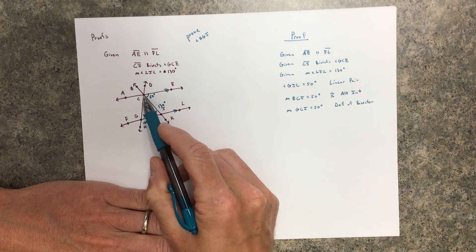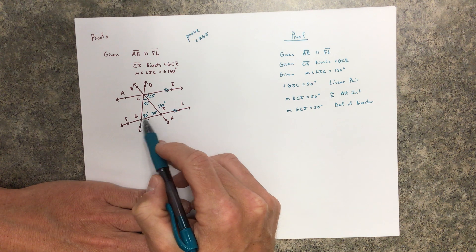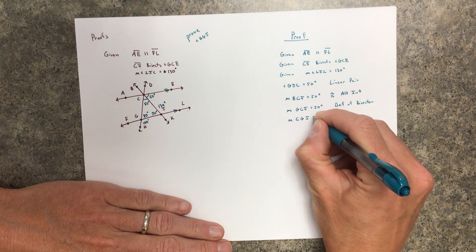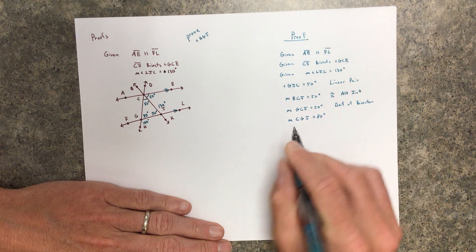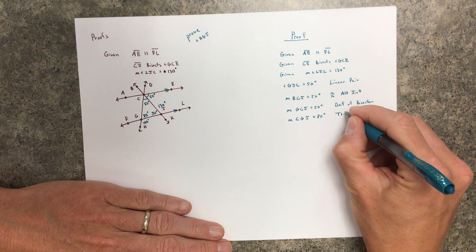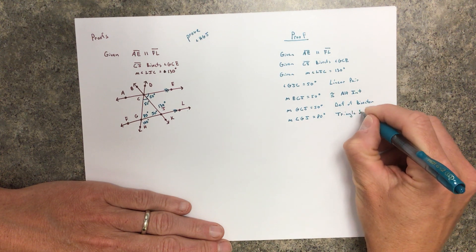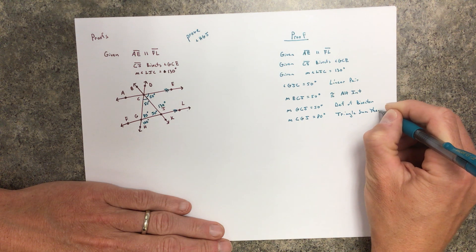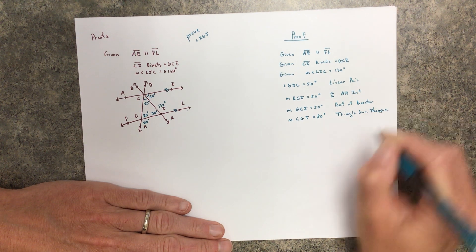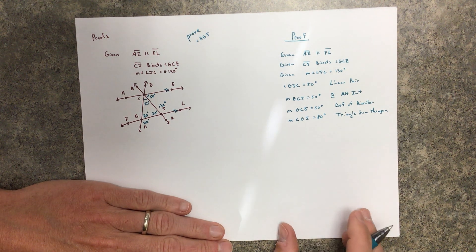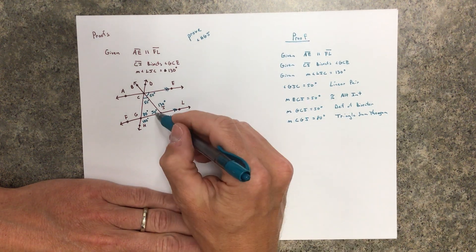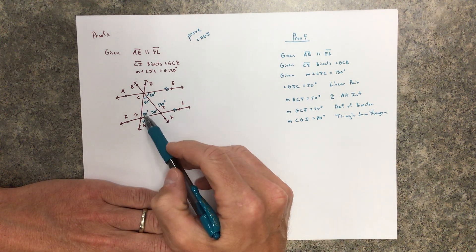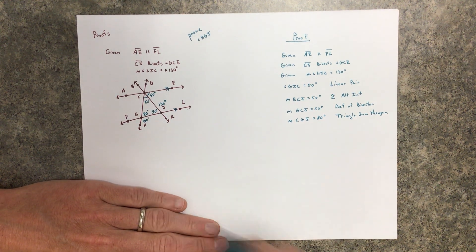Then the measure of angle CGJ was 80 degrees. Why did we know that? The triangle sum theorem. We know that if you take a triangle and you add up all three measures, you get 180 degrees. So 50 plus 50 plus what equals 180, and a little algebra.